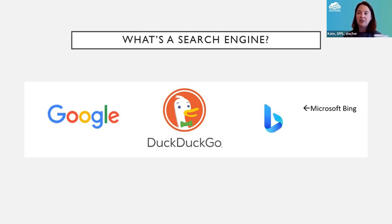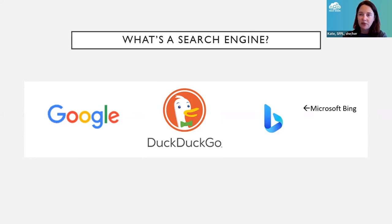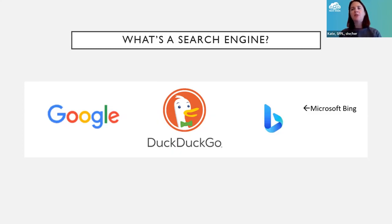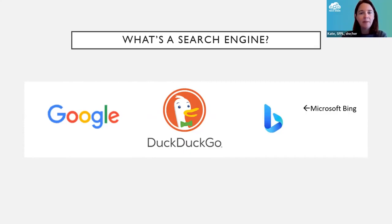That's also why when you search the same terms in different search engines, you may get different results — they're using a different formula to decide which web pages might be most responsive to your query. Google has that large market share in part because they got really good at search. They paid attention to what people clicked on after they searched, and they refined and refined. Now Google pretty much seems to know what you're asking before you even type it, because of all that data analysis over time.